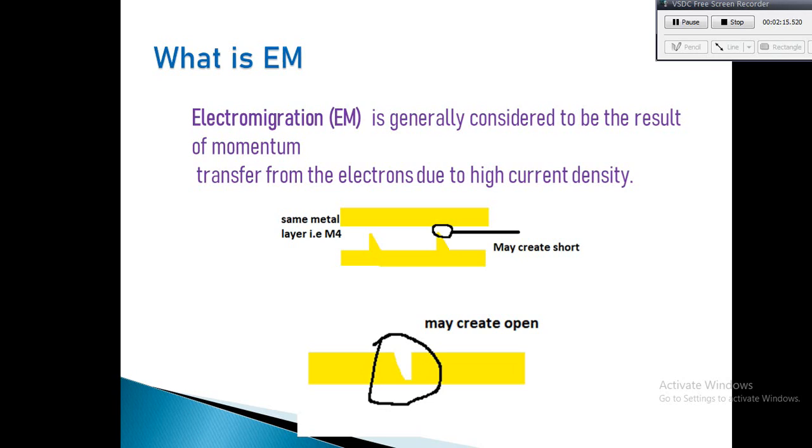What can go wrong when metal atoms drift away from their intended positions? One problem is open circuits due to voids in wires. Another problem is short circuits due to hillocks on wires—the wire may extend. Either can cause system failure that is hard to diagnose. These issues are caused by differences in incoming and outgoing ion flux.